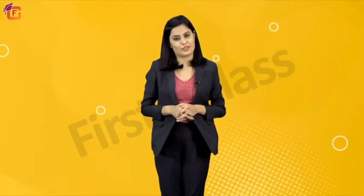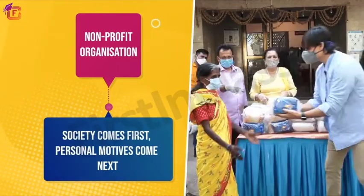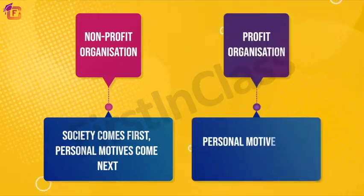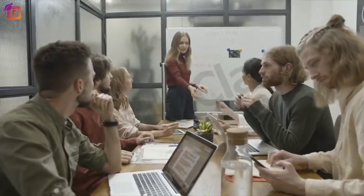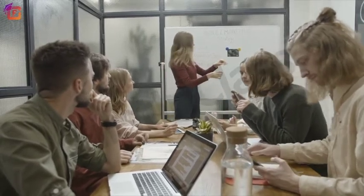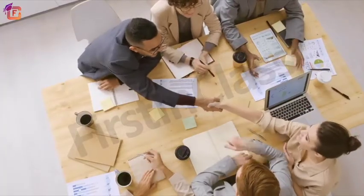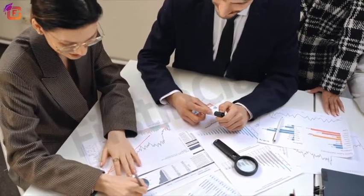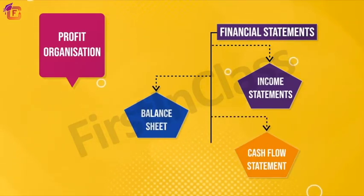Hello learners, welcome to the video. For nonprofit organizations, society comes first and personal motives come next, but for profit organizations it is just the opposite. In our previous video we learned about the profit organization, which is built to serve the business owners. Profit organizations make profit directly or indirectly by selling goods or services. The financial statements prepared for profit-making organizations are the income statement, balance sheet, and cash flow statement.